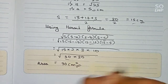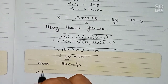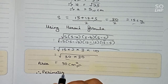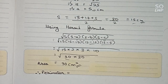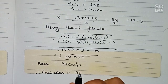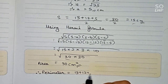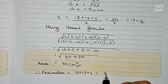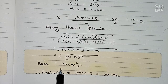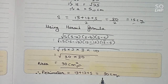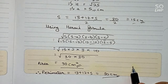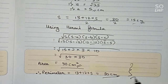Now, the perimeter is simply the sum of all three sides: 13 + 12 + 5 = 30 centimeters. So the area is 30 cm² and the perimeter is 30 centimeters — these are our final answers.